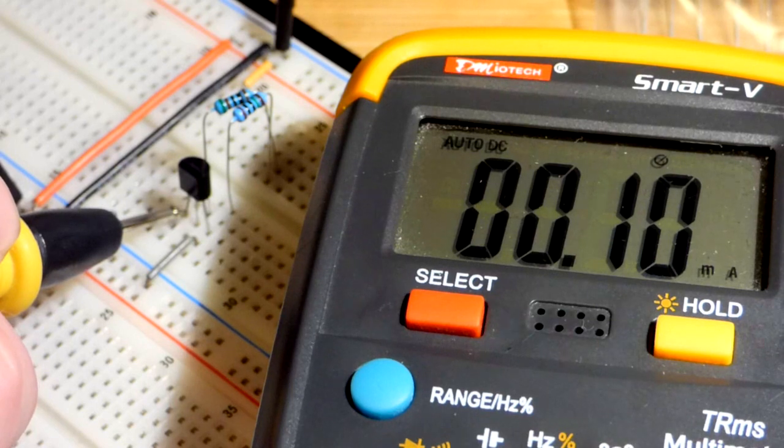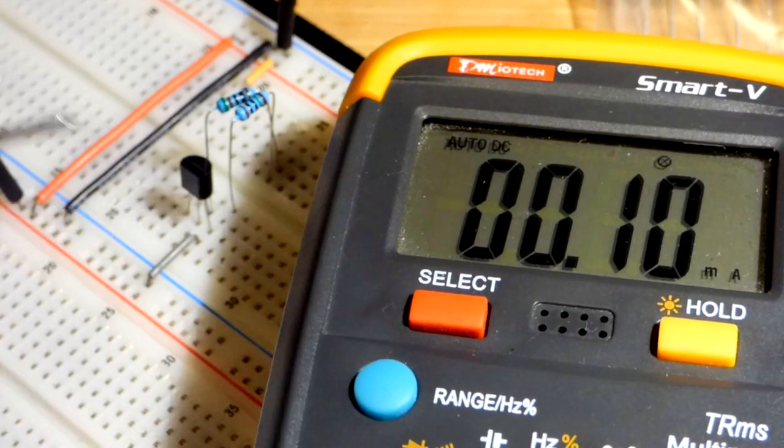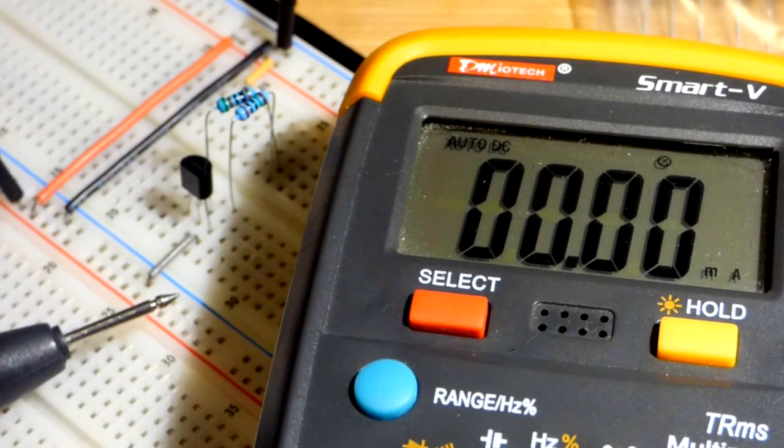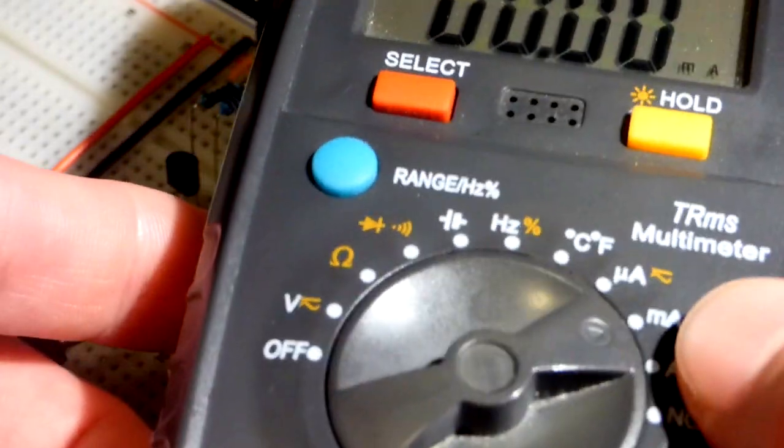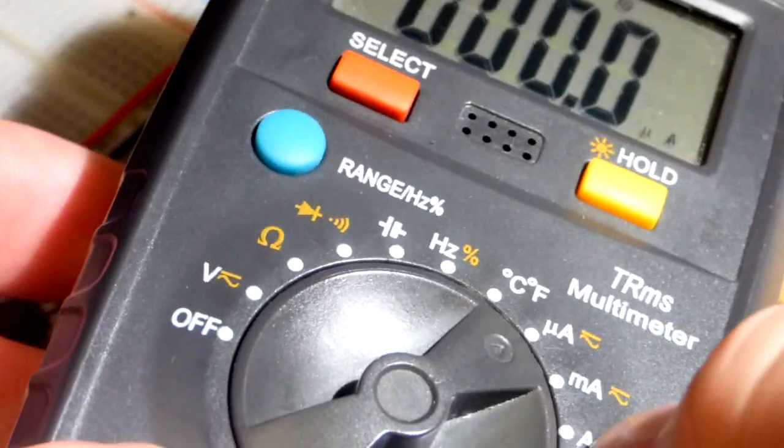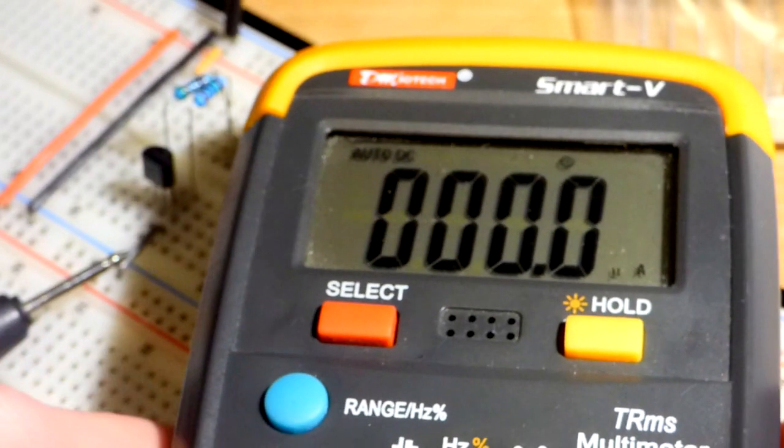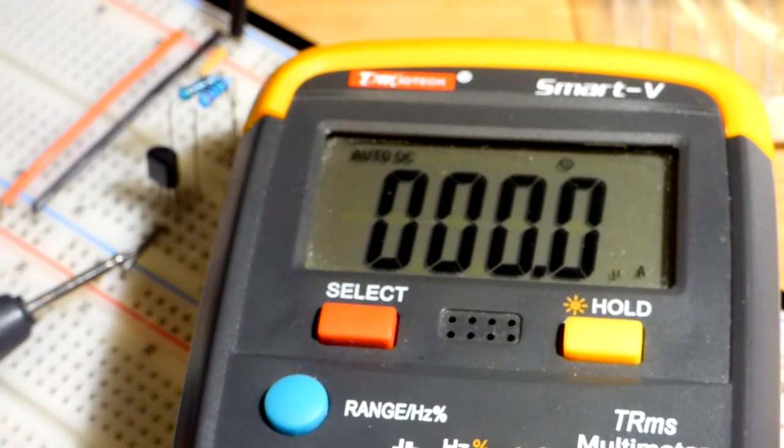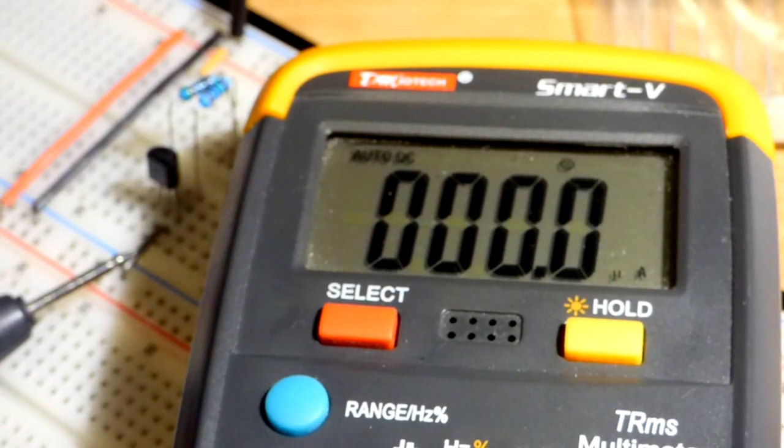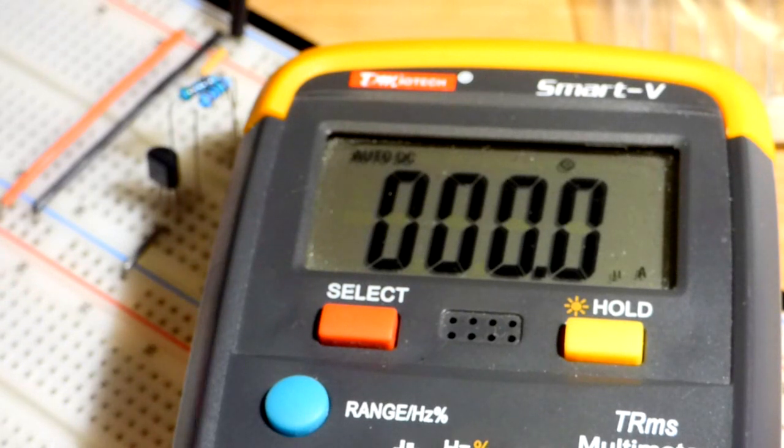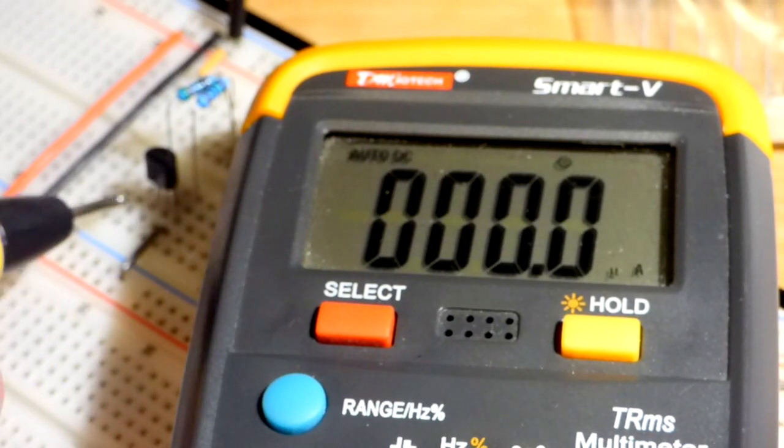So that's exactly what I want right there. But for a more accurate reading, we can go down to the microamp range. So we definitely know it's not in the milliamp range. And go to the microamp range, micro is 1 millionth of an amp. And so now, again, we measure the current there.